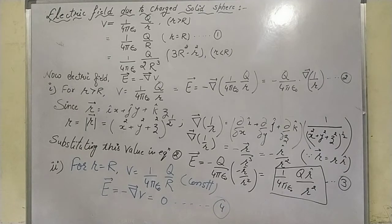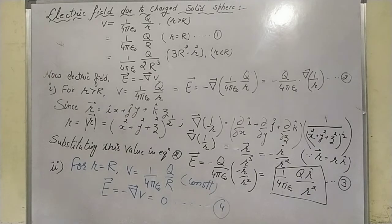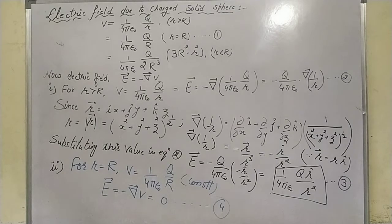We know the definition of the electric field: E is equal to minus del dot V, or the gradient of the potential. From this definition we derive the equation: E = −∇V. Now there are three cases.